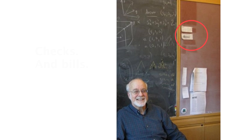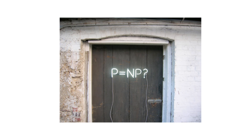Ron had this crazy chalkboard in his office, and on his chalkboard he would have all these intense formulas. This is where we'd talk about a lot of our proofs. Next to the chalkboard, he had all these checks and bills that said, does P equal NP?